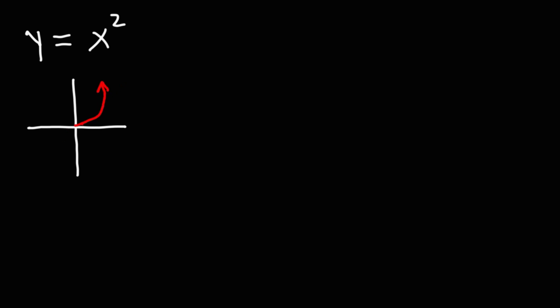It really helps if you can draw the graph. If you can see the graph, it's very easy to determine the domain and range. When finding the domain of a function, focus on the x values. All the way to the left we have negative infinity, and to the right we have positive infinity. For a quadratic function, the domain will always be all real numbers, from negative infinity to positive infinity — x can be anything, there are no restrictions on the value of x.